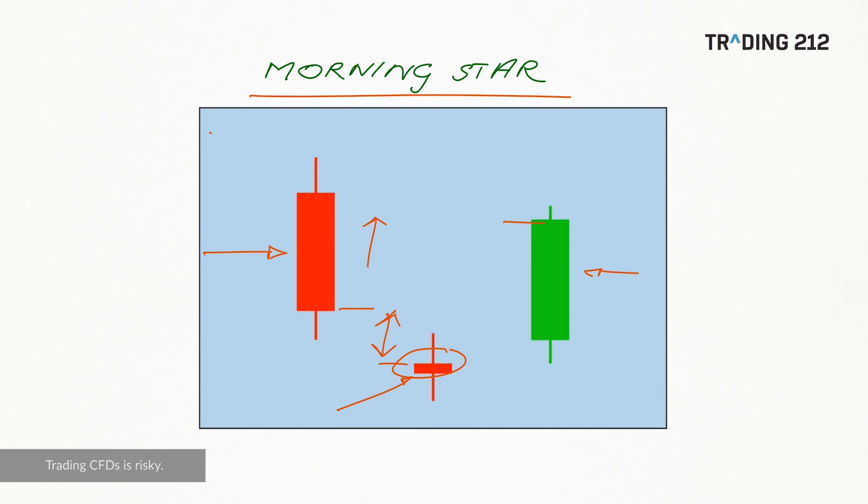Leading into this pattern then, we'd expect to have a falling market. We're in a downtrend and the market is in the clutches of bearish forces. And this first red candle shows this still to be the case.